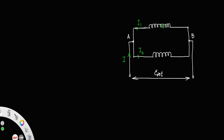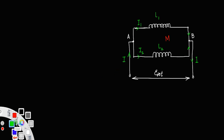I1 flows through the first inductor and I2 flows through the second inductor. They will again meet and come out of B as I itself. Let L1 be the self-inductance of the first inductor and L2 be the self-inductance of the second inductor. Since these two inductors are close to each other, the system has a mutual inductance of M. Clearly, in both coils, current is flowing from left to right.